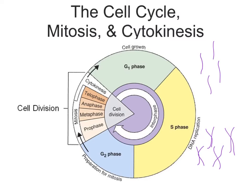That is really important because later on in the cell cycle, when the cell divides, each new cell will have a copy of the DNA. We'll talk about DNA replication and how that occurs later on. After the DNA is replicated, we go into the G2 phase, sometimes also known as growth 2. The cell grows a little bit more, and here it's really preparing for mitosis — organelles and proteins are being synthesized. Then we go into cell division.